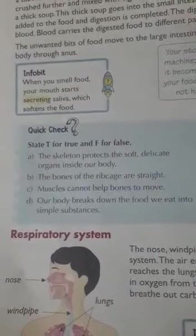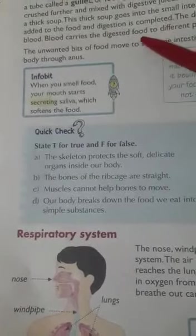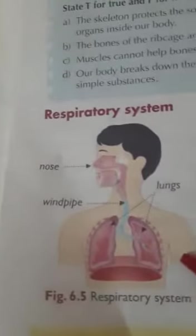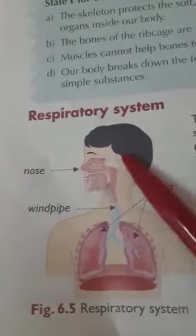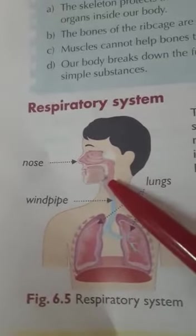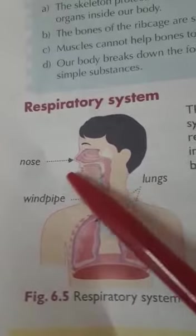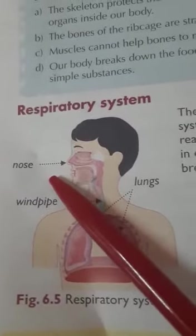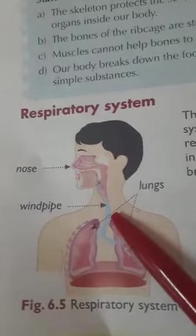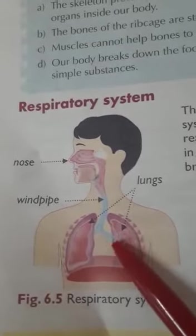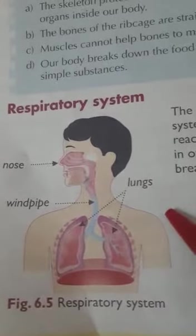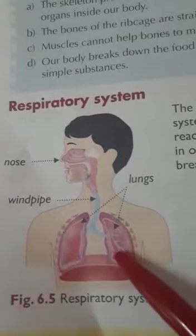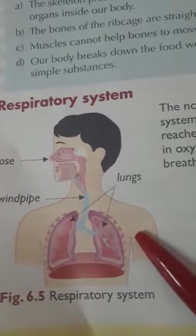Next is the respiratory system. The organs involved are: nose, windpipe, and lungs. When we breathe in, air passes through the nose and windpipe, then goes to the lungs. From the lungs, oxygen is absorbed into the blood, and the blood carries oxygen to all parts of our body.